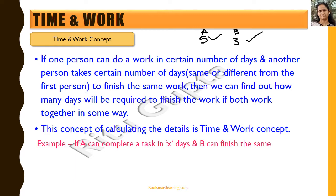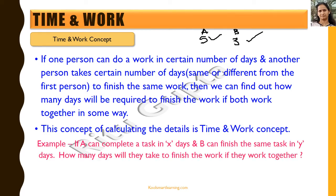Let's take an example. Say A completes a task in X days while B finishes the same task in Y days. How many days will they take to finish the task if they work together? When we say together, we mean both of them are continuously working. But there could be other scenarios — A works partly, and B starts after A has done half the work, for instance.